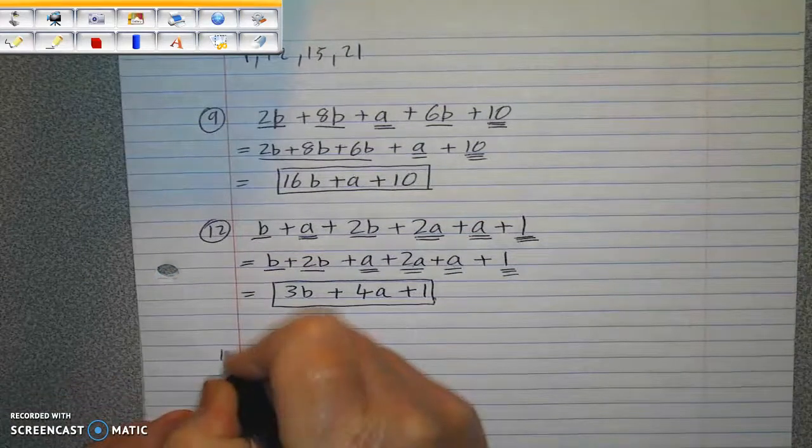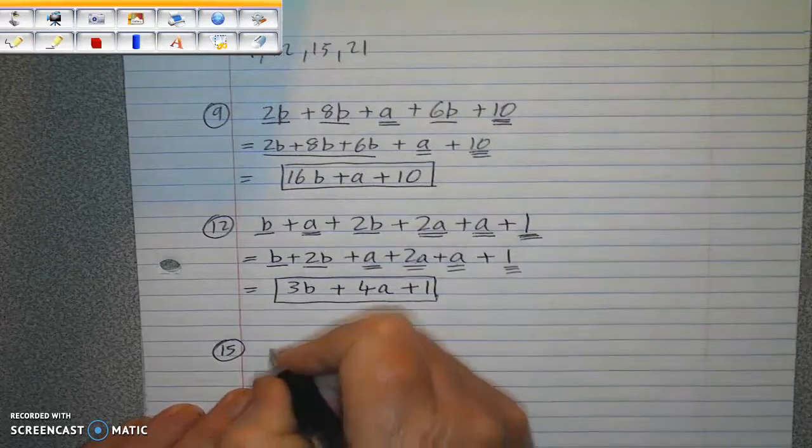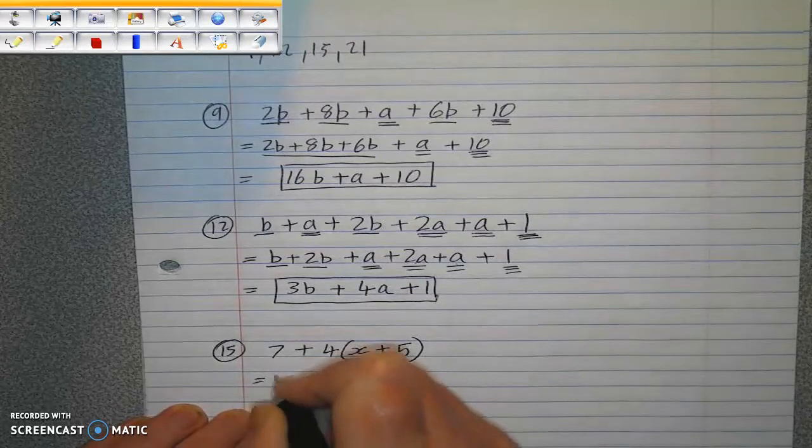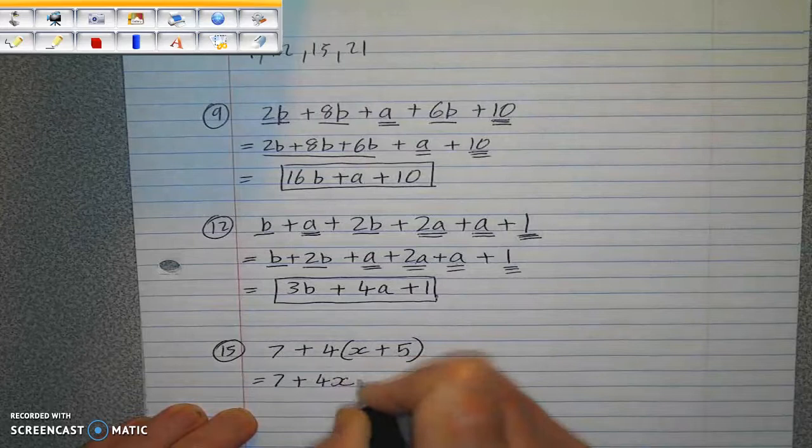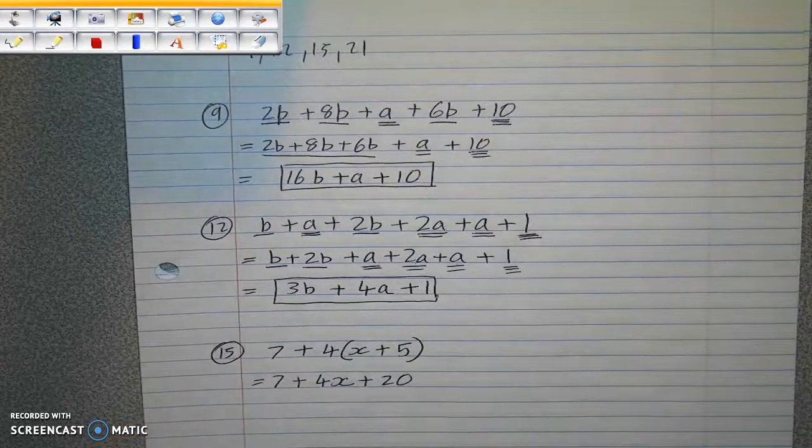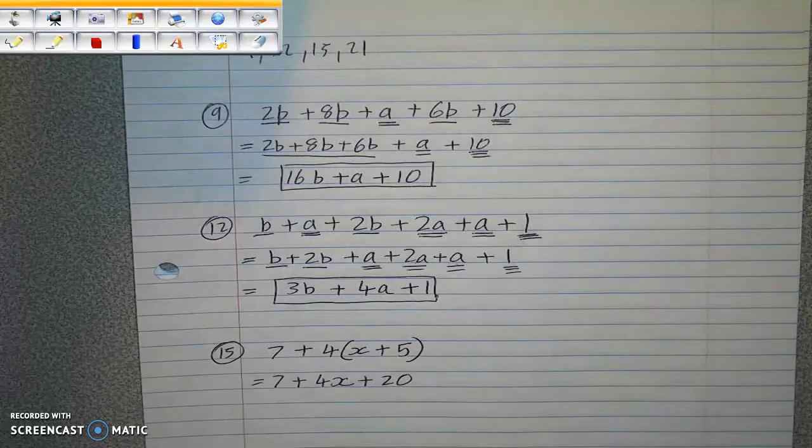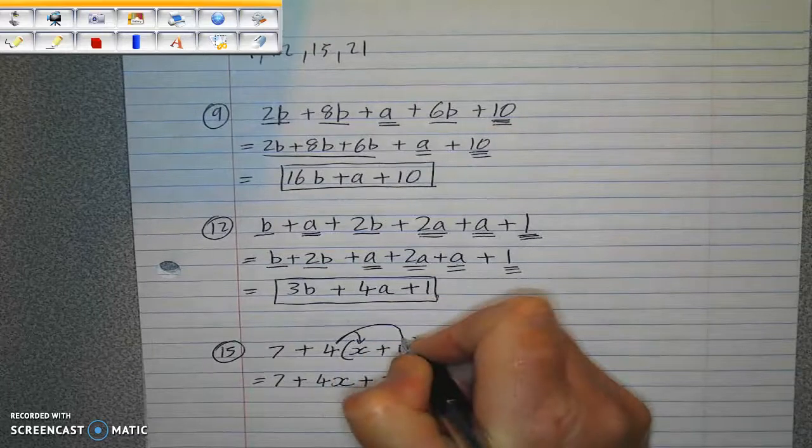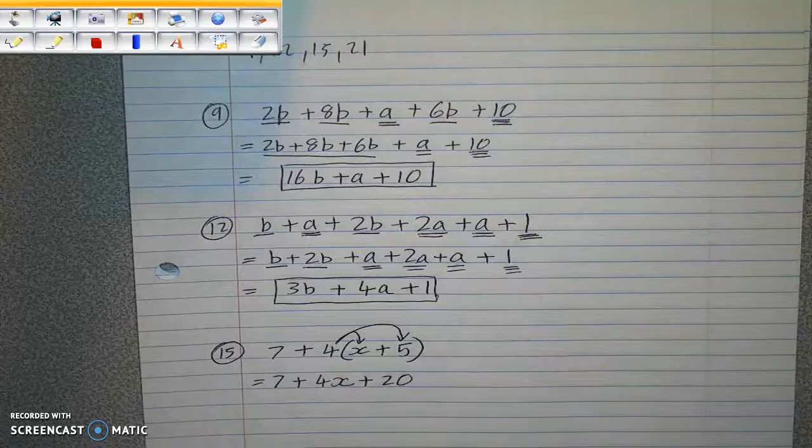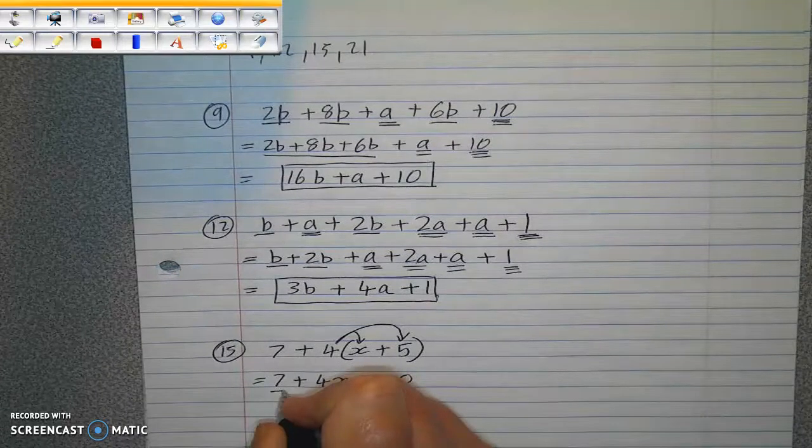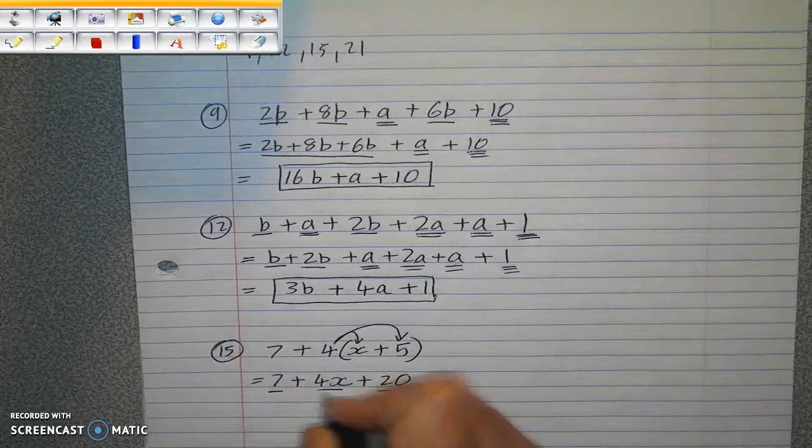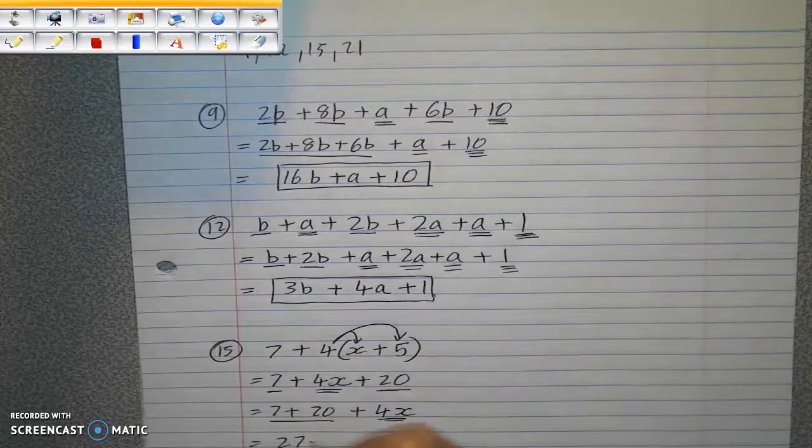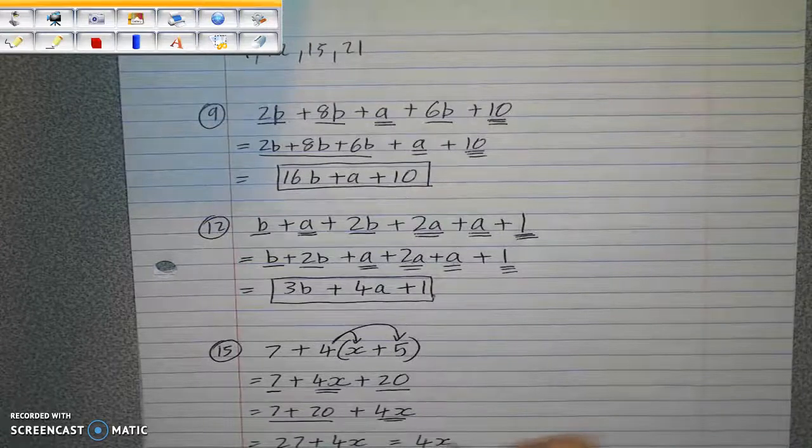We're going to move on to number 15. 7 plus 4 groups of x plus 5. So you use the distributive property first and you multiply everything inside the parentheses by the 4. So 4 times x is 4x and 4 times 5 is 20. You can use these little arrows to show that you're doing the multiplication. Then let's underline like terms. There's a constant term, there's another constant term, and there's the x term. 7 plus 20 plus 4x. So the answer is 27 plus 4x, which is the same thing as 4x plus 27.